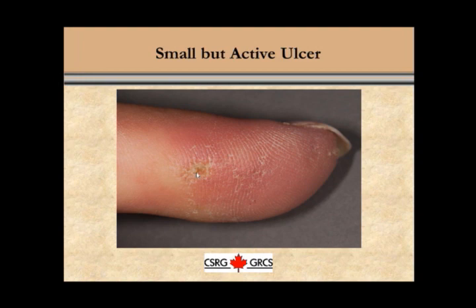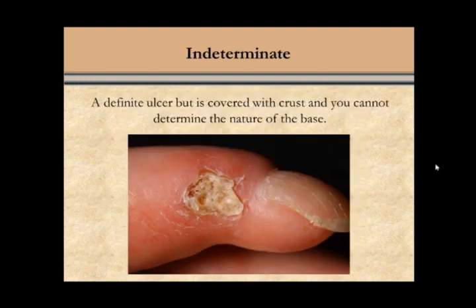This is another example of a small but probably active ulcer. It may be difficult to tell from the photograph, but in real life, if you feel that this little area here — where there is scab — is in fact an ulcer base, then you can determine that this is an active ulcer. Indeterminate ulcers are definite ulcers but are covered with crust. This is an example where it's quite clear that there is depth to this lesion, but you cannot really see the base of the ulcer because of all the crust. If you can't see the base and cannot determine whether it is de-epithelialized, then you should call this an indeterminate ulcer.